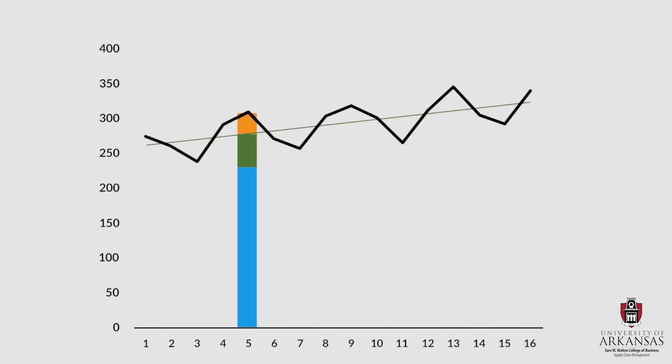Again, we have a base level, an added trend component, and in this case, a negative seasonal component, since demand appears to drop in the third quarter of each year. We can similarly decompose each demand observation in our data set into base levels, trend, and seasonal components.